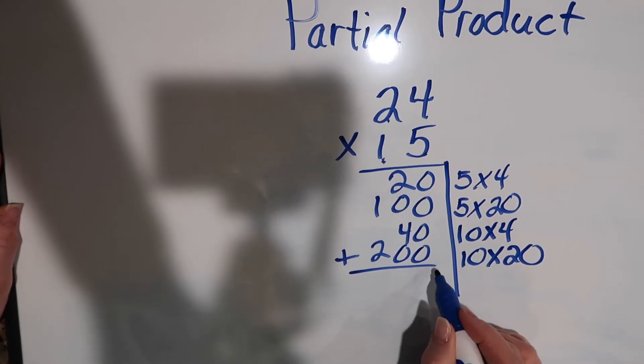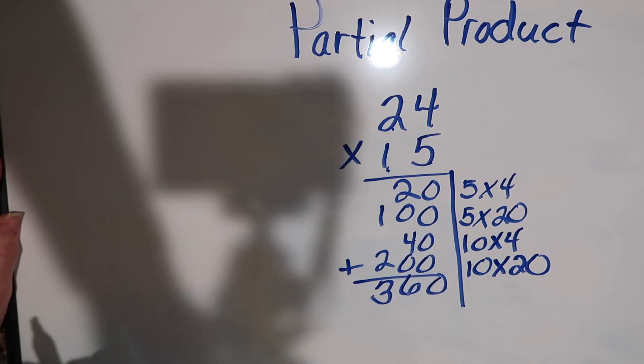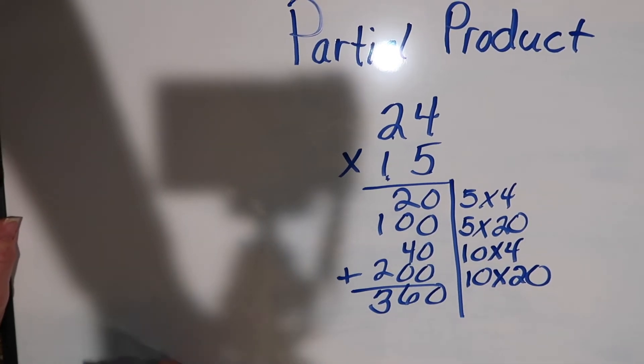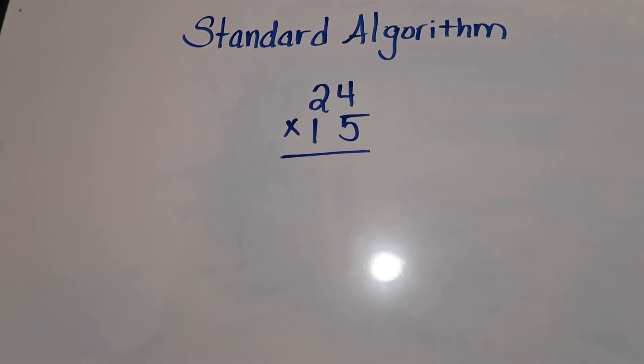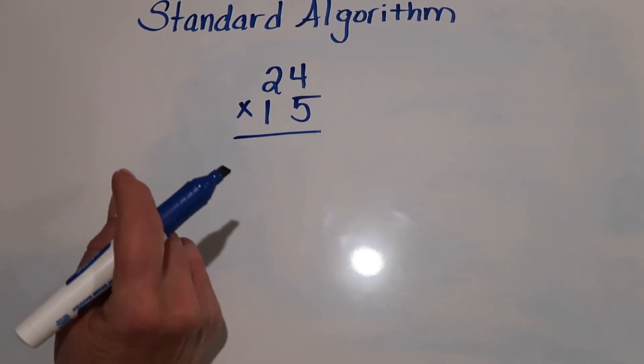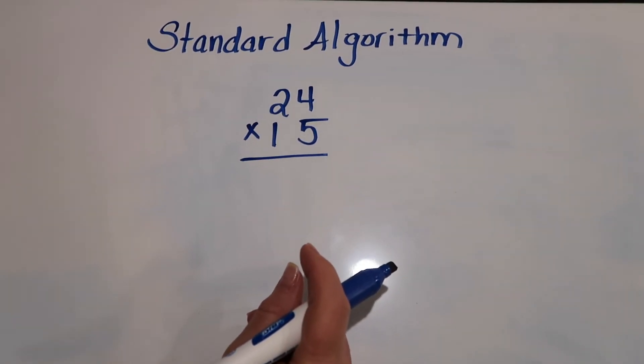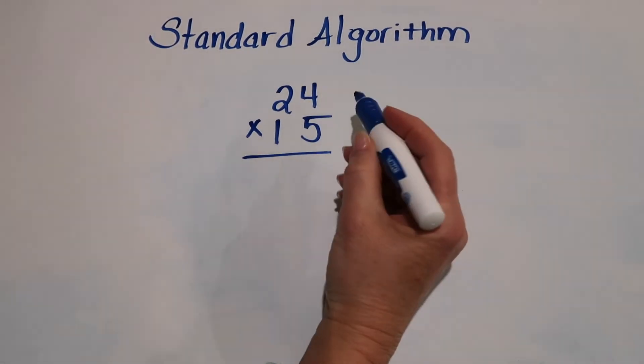We're going to add those up and we're going to get our product, which is 360. And the last strategy we're going to use is the standard algorithm.